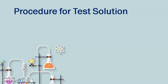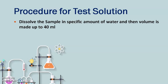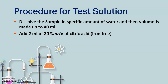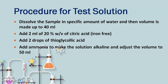For the procedure, first dissolve the sample in a specific amount of water, then make up the volume to 40 ml — this whole procedure is performed in the Nessler cylinder. Then add 2 ml of 20% citric acid, followed by 2 drops of thioglycolic acid. Then add ammonia and check the pH using litmus paper — it should be alkaline. Keep the solution aside for 5 minutes. This is for the test solution.